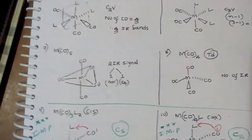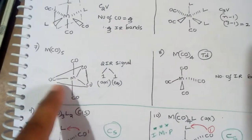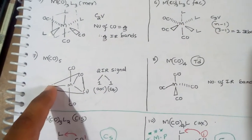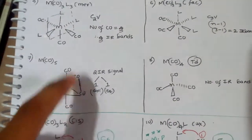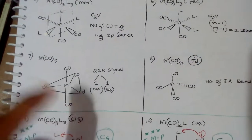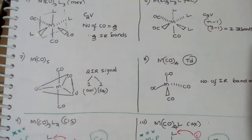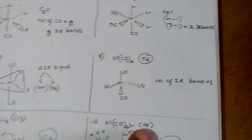For MCO5, two IR bands are there. Because the three CO groups are in equatorial position — this gives one IR band — and these two CO groups at axial position give one IR band. Therefore, it gives two IR signals.